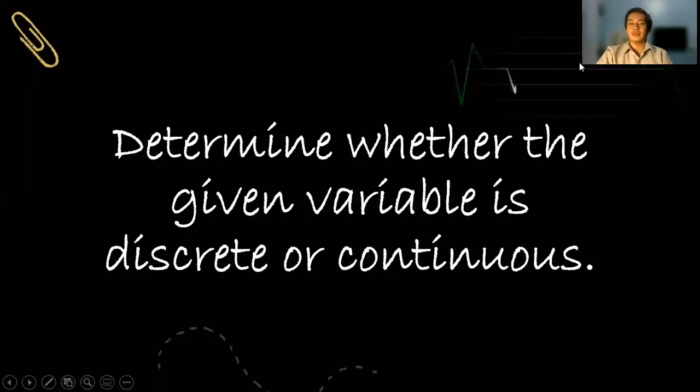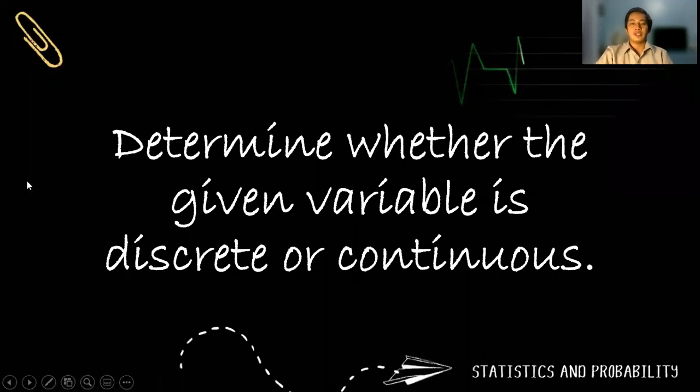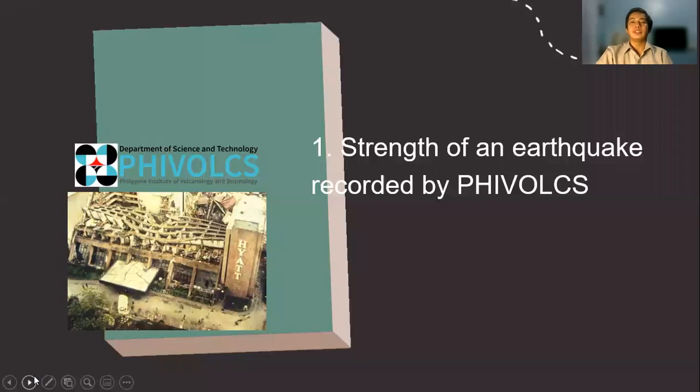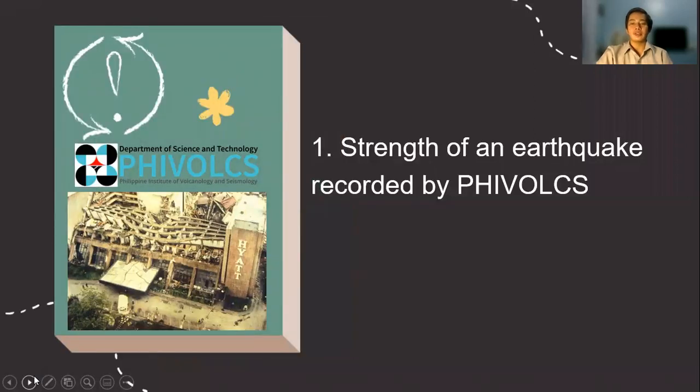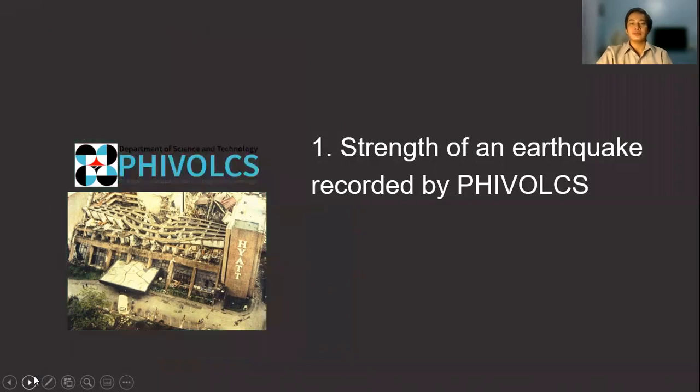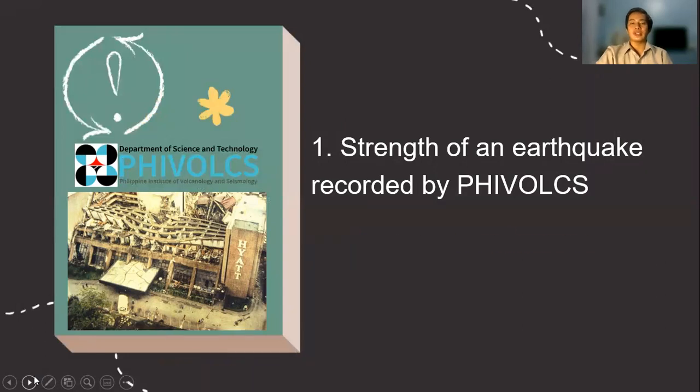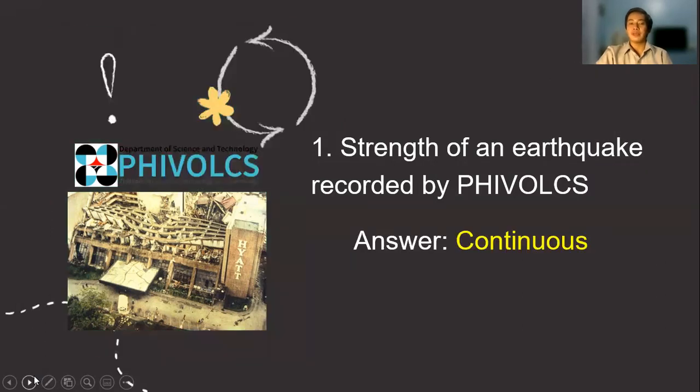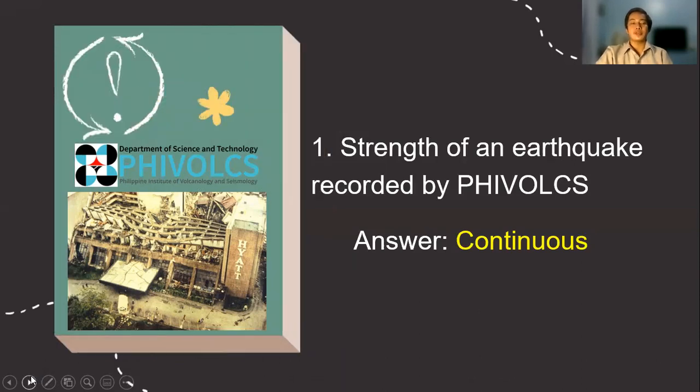So let's have a short activity for the discrete versus a continuous. So given certain variables, let's determine whether they are discrete or continuous. First one, the strength of an earthquake recorded by field box. Very good. The correct answer is continuous because sometimes we can record like magnitude 5.1, 6.4, and so on. So that is continuous. And we know that the magnitude or the strength of an earthquake could be expressed as a measured data.